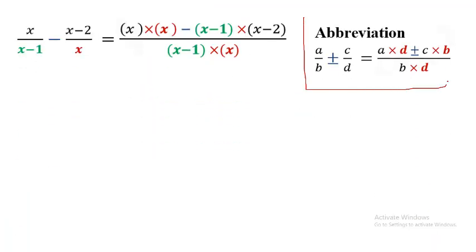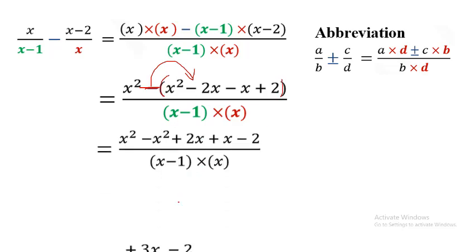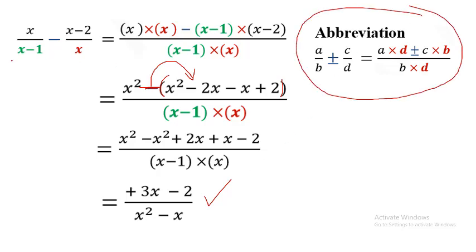When adding these fractions together, multiply this by that for the numerator here, and this by that there. We have a minus sign, so we must expand carefully. Pay attention to the minus - it affects the sign of everything in parentheses. Many students make mistakes by forgetting to put parentheses.